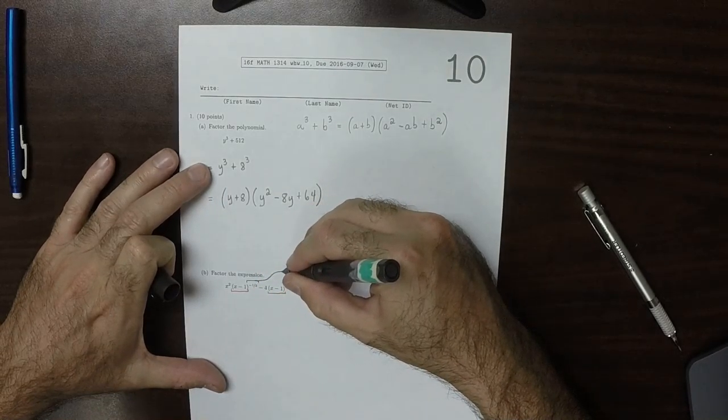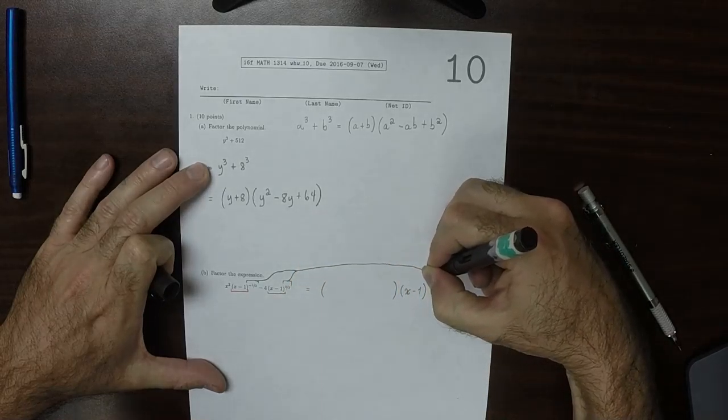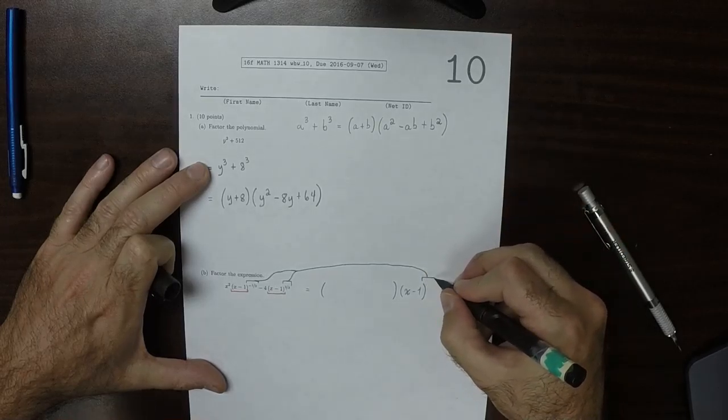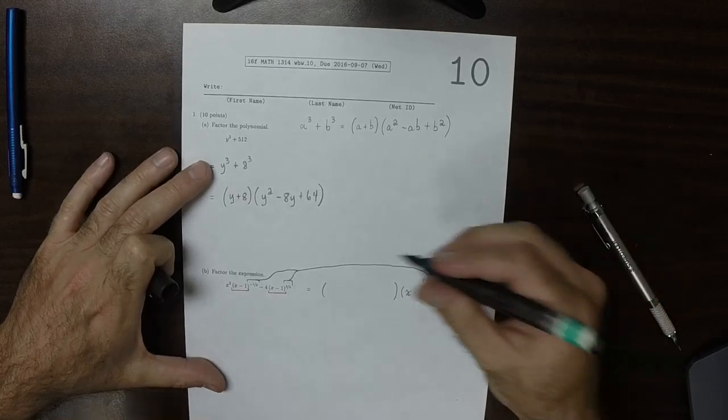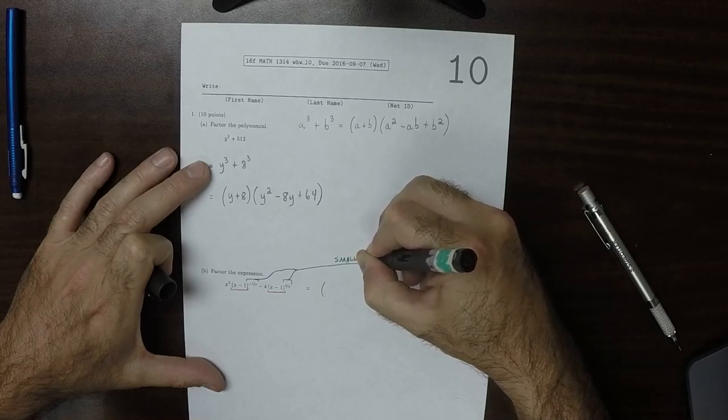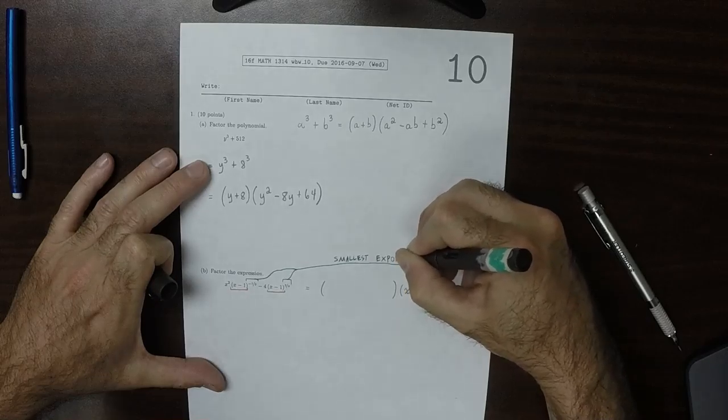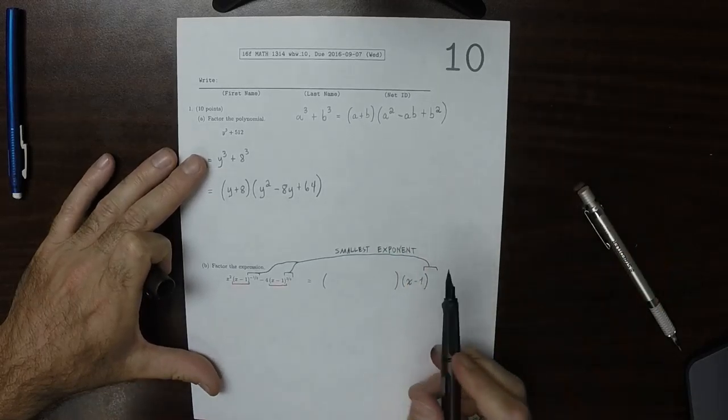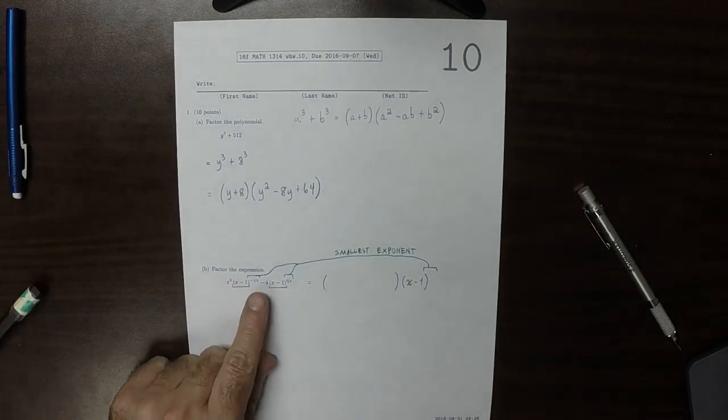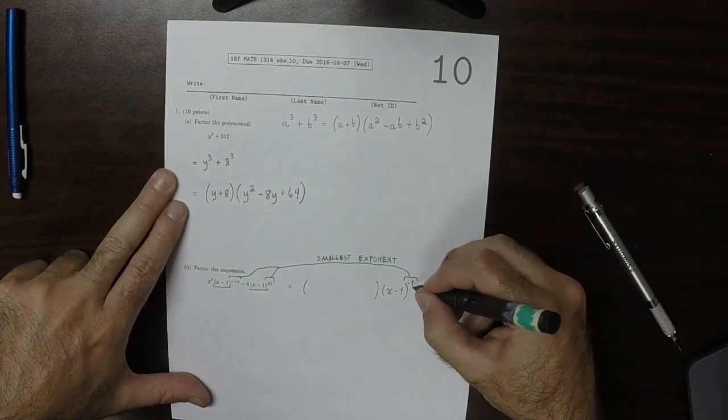So we take these two and we have to factor out an exponent. What's the rule for choosing what exponent to factor out? The rule is you take the one that is smallest, meaning further to the left on the number line. So negative 1/3 is further to the left, so we will factor out negative 1/3.